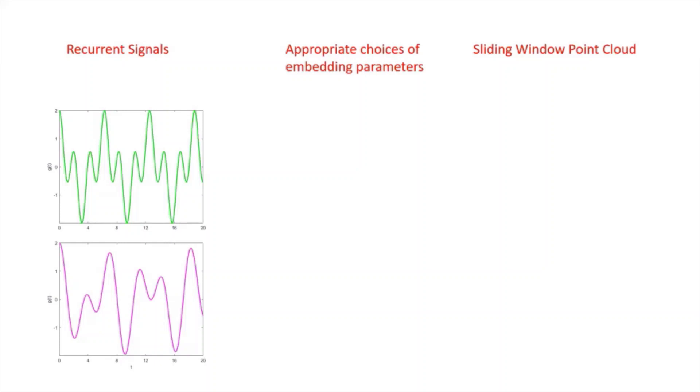So for the first function, we choose appropriate parameters, and for sufficient points, we compute the sliding window point cloud, and we see that what we get back is essentially something homeomorphic to a circular trajectory.